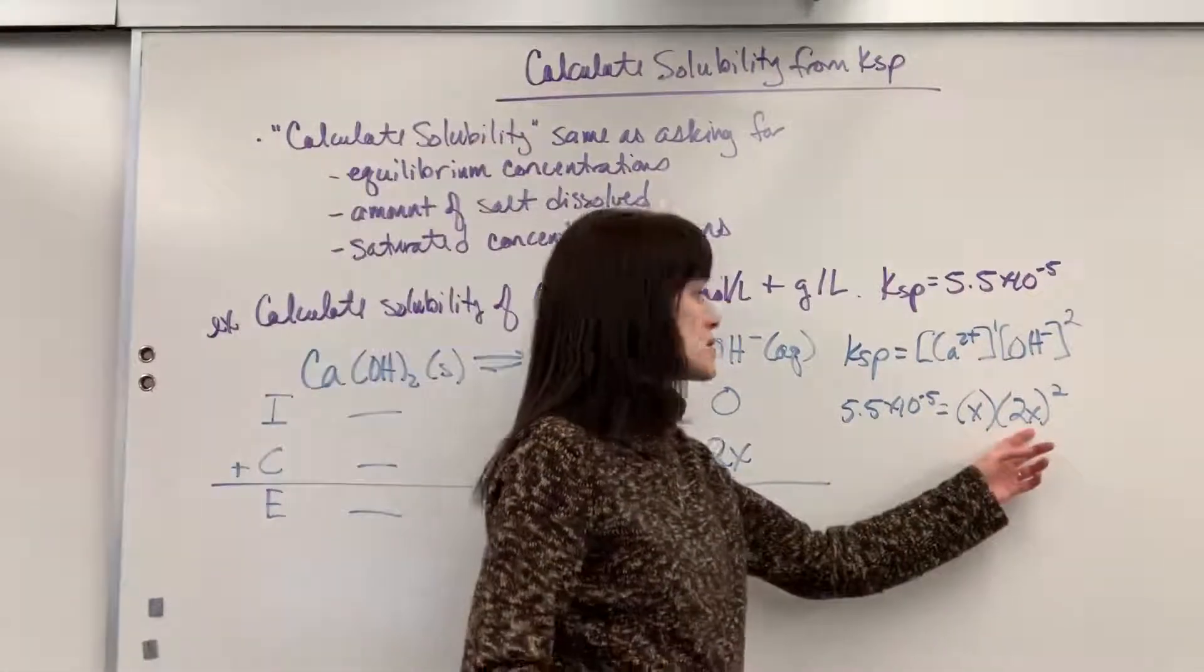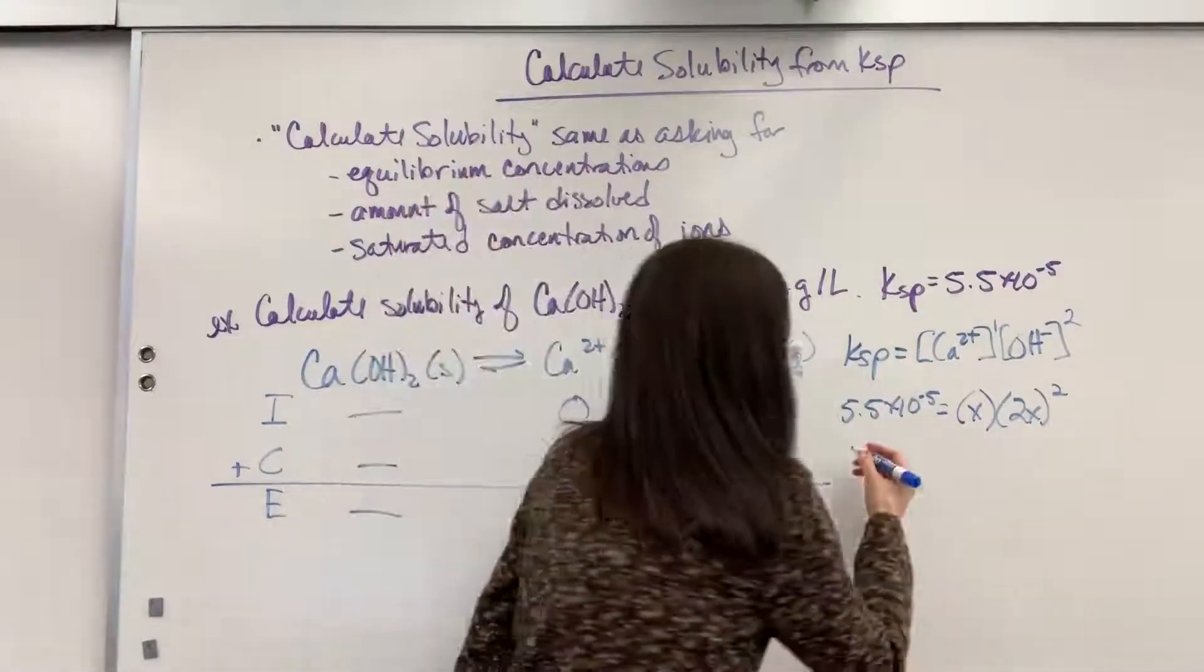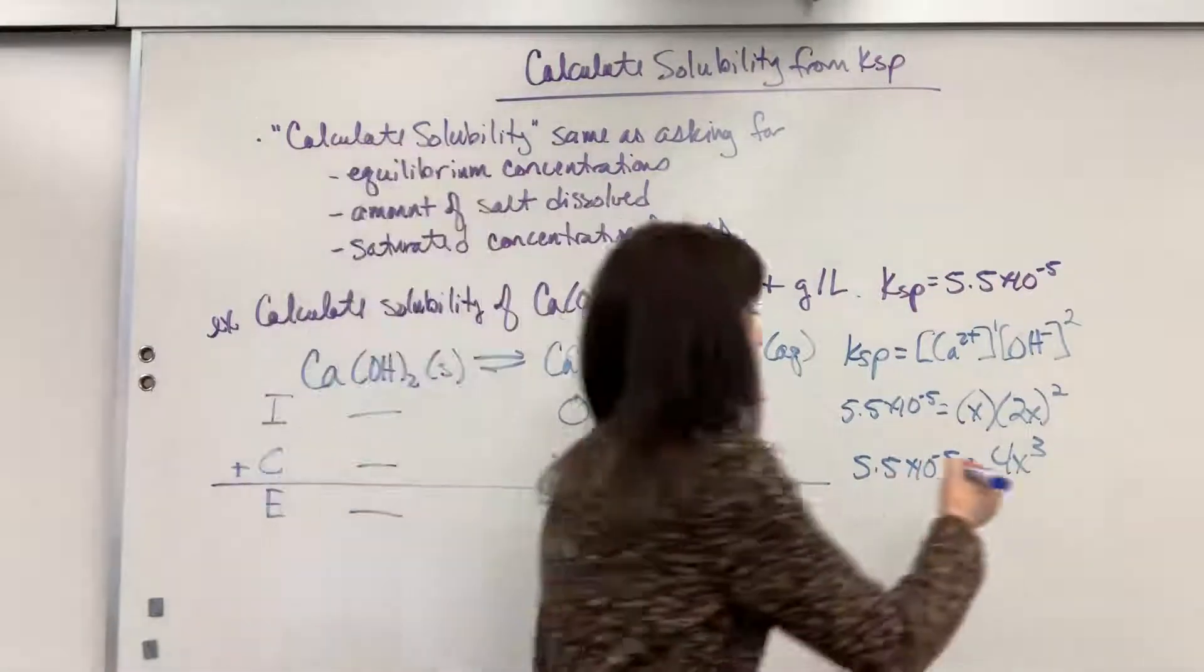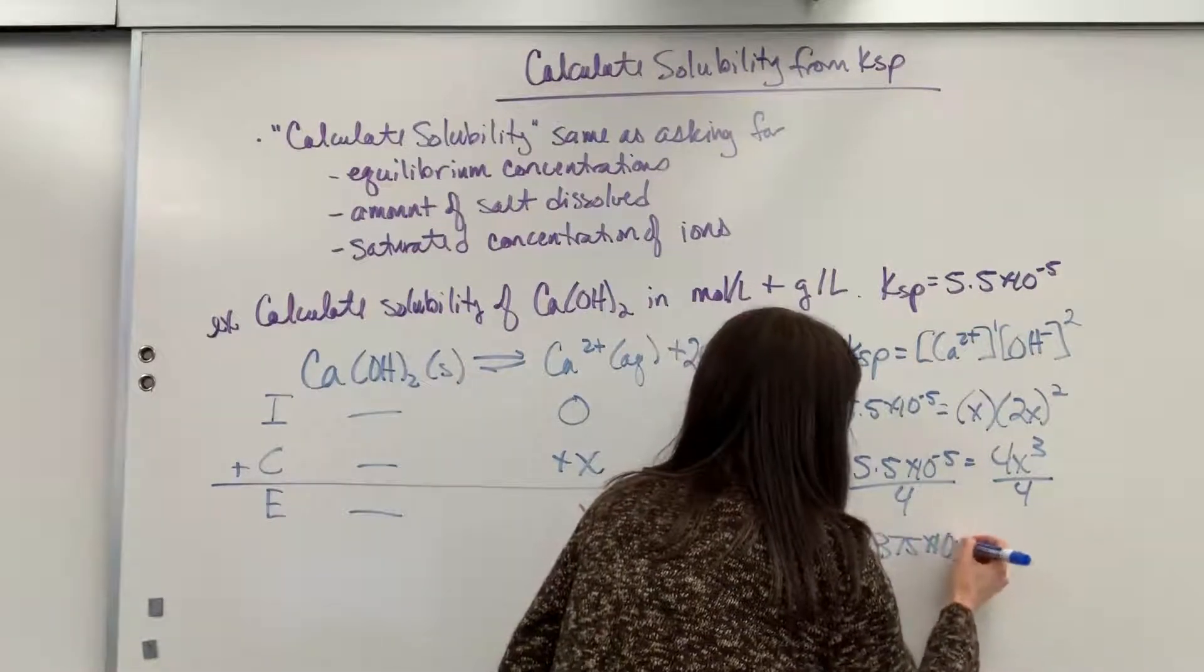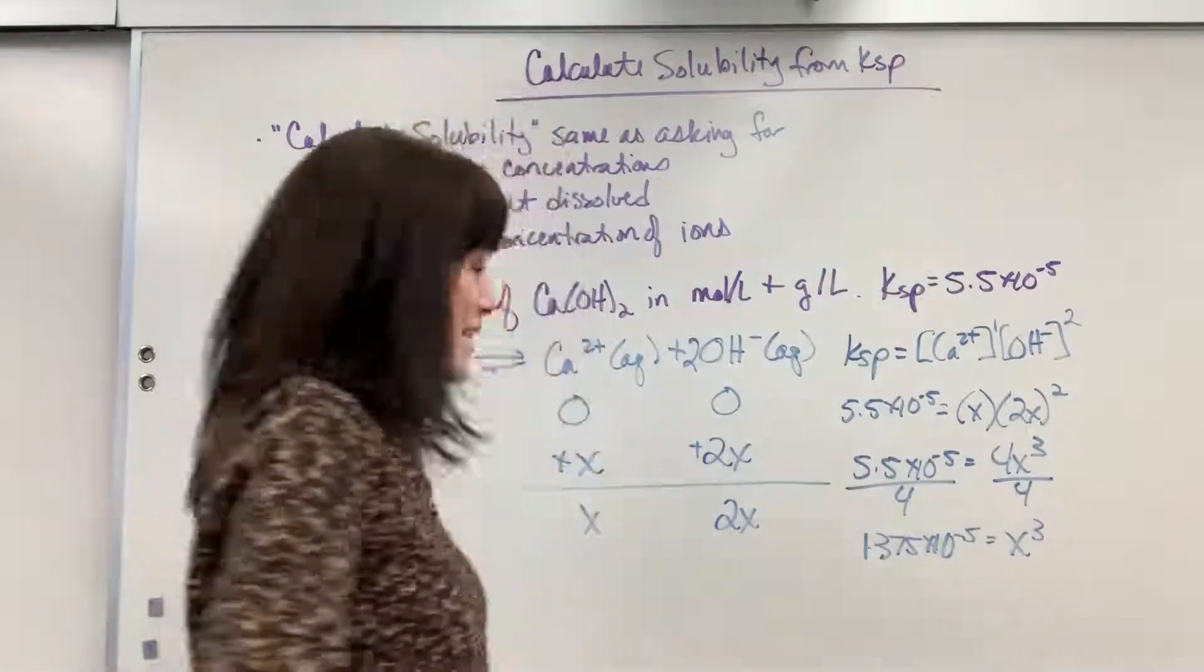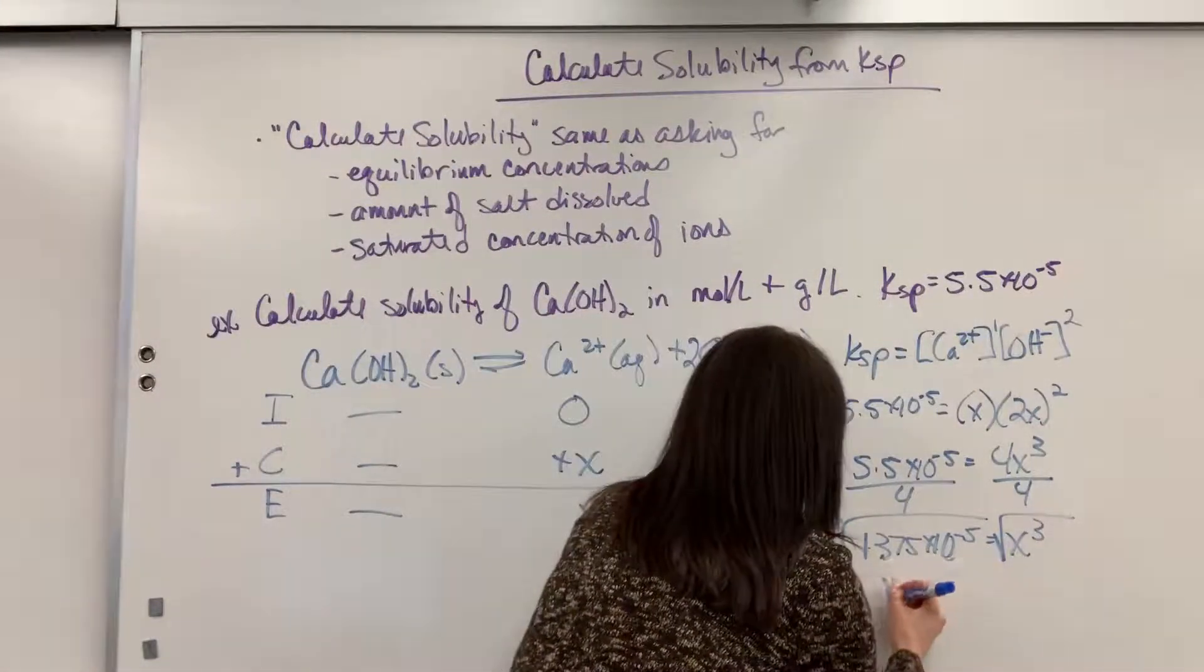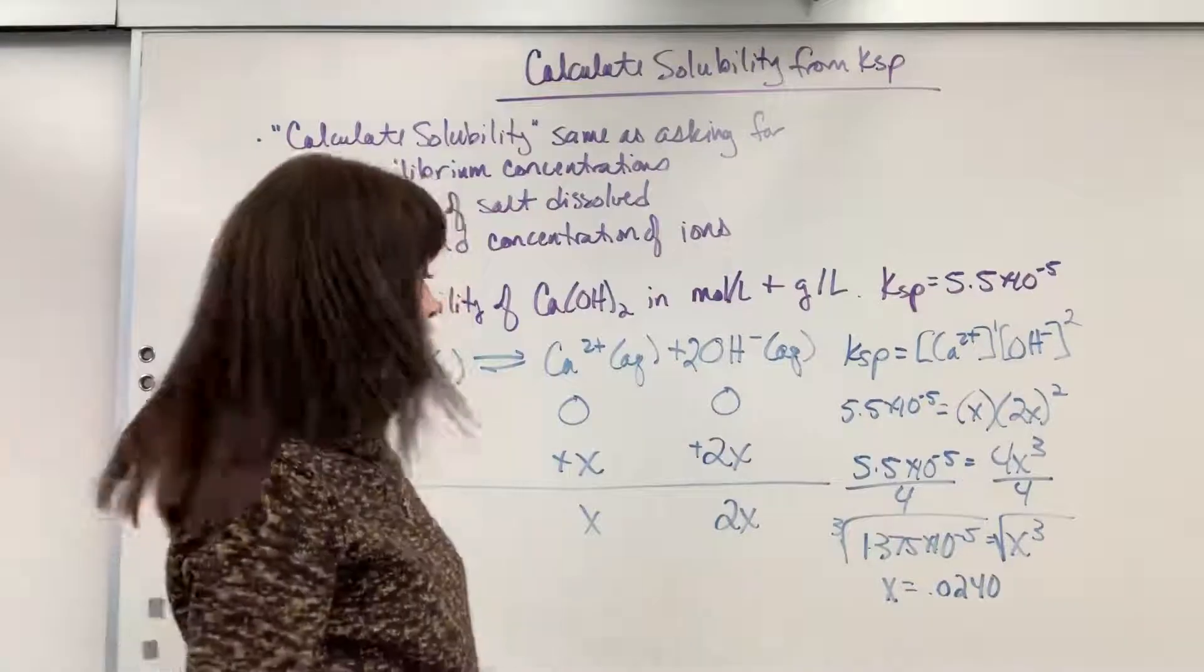So let's do our math here. 2x times 2x is 4x squared times x is 4x cubed. So 5.5 times 10 to the minus 5 equals 4x cubed. Just be careful with your algebra. Double check yourself every time you do this. Let's go ahead and solve for x. So if I divide both sides by 4, we're going to get 1.375 times 10 to the minus 5 equals x cubed. How do I get rid of a cube? We cube root. So let's take the cube root of both sides. And when we put that in our calculator, we're going to get x equals 0.0240.